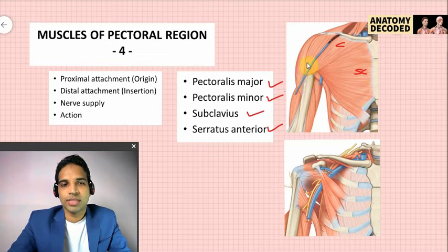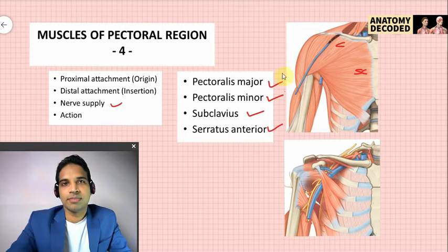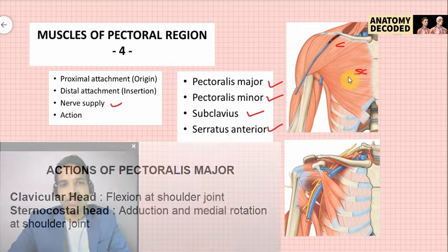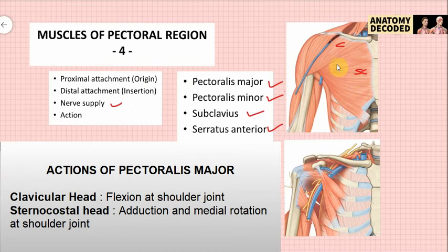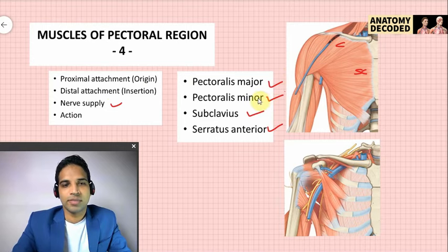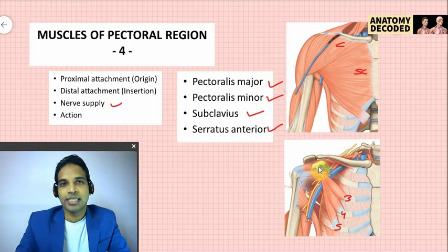The distal attachment of pectoralis major is the lateral lip of the intertubercular sulcus, also referred to as the bicipital groove. The nerve supply of pectoralis major is the medial and lateral pectoral nerves. Pectoralis minor arises from the third, fourth, and fifth ribs. Its distal attachment is the medial aspect of the coracoid process of the scapula. Nerve supply is again by medial and lateral pectoral nerves.